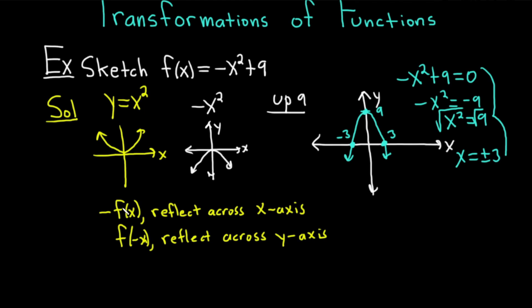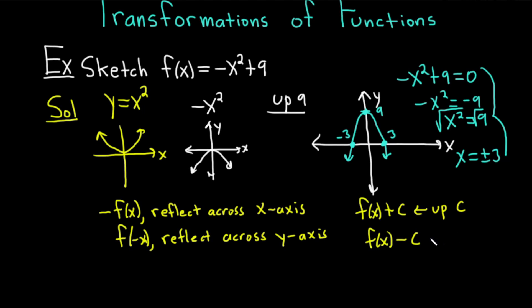Here's a trick for memorizing this. Recall that y equals f of x. So when you have a negative in front of the y, you reflect across the other one — across the x-axis. When you have a negative in front of the x, you reflect across the other one — the y-axis. As for the vertical shift: whenever you add a number to the function, if you have f of x plus c, you go up c units. If you have f of x minus c, you go down c units.